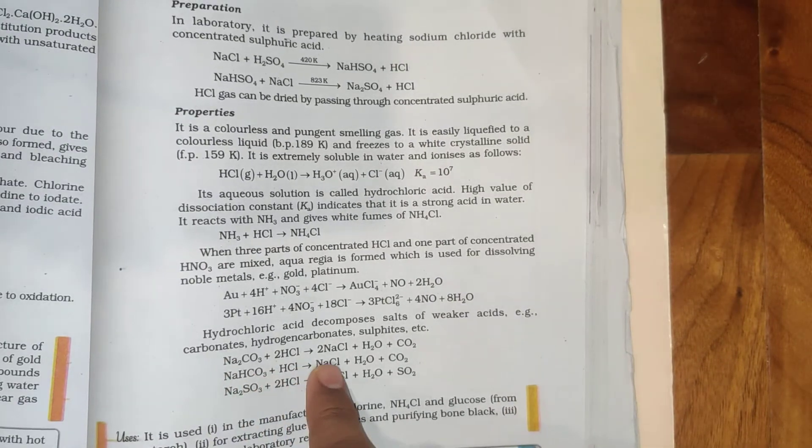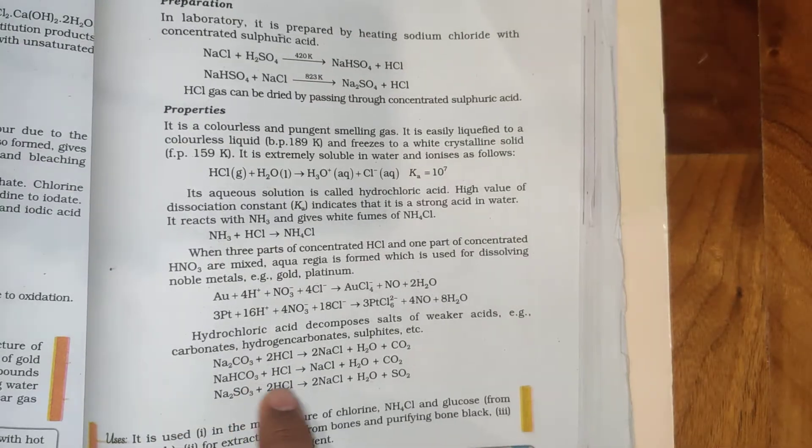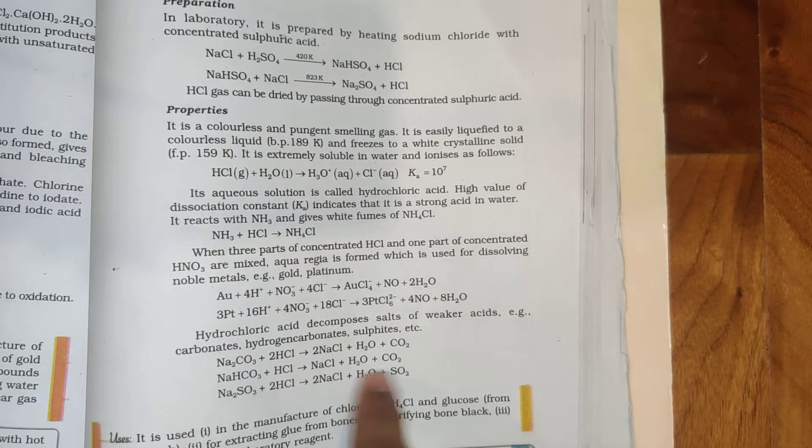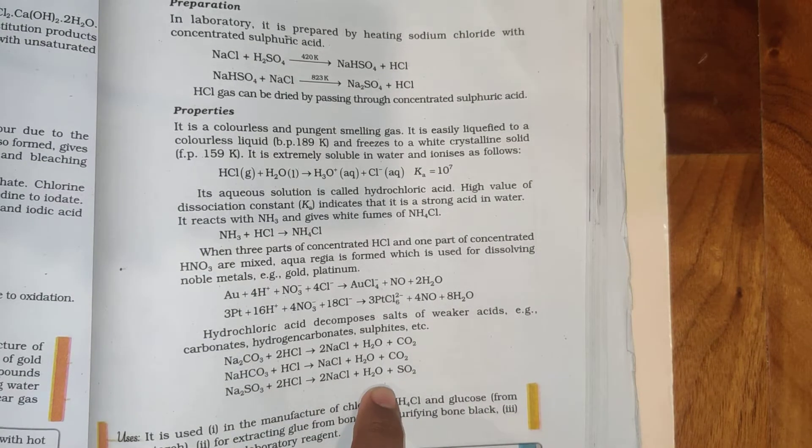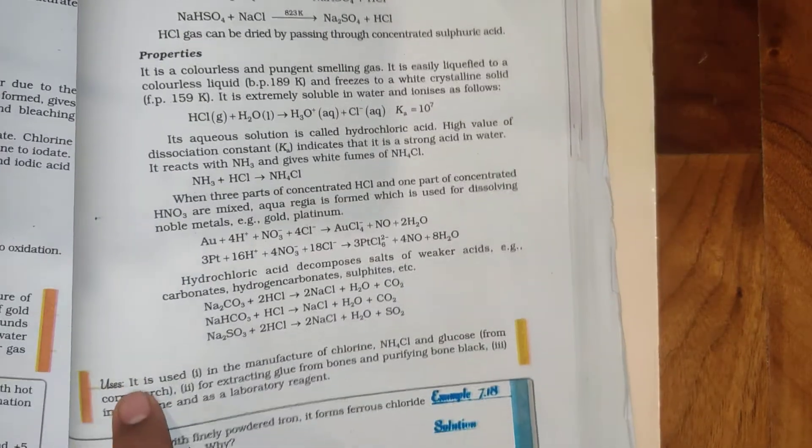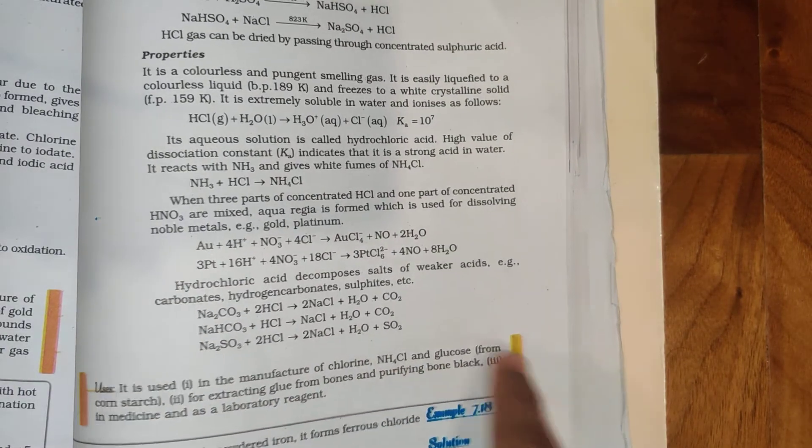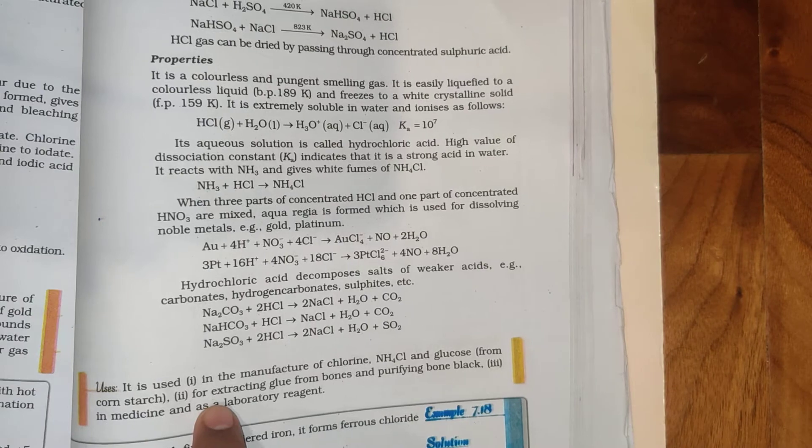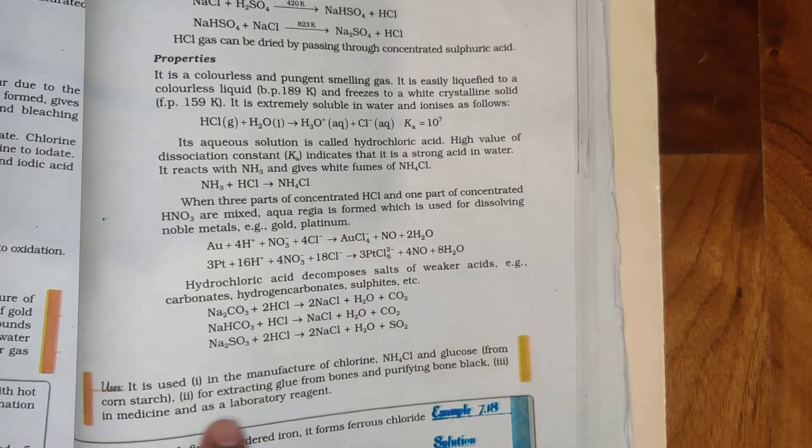Na2CO3 plus 2HCl gives 2NaCl plus H2O plus CO2. NaHCO3 plus HCl gives NaCl plus H2O plus CO2. Na2SO3 plus 2HCl gives 2NaCl plus H2O plus SO2. It is used in the manufacture of chlorine, NH4Cl, and glucose from corn starch, for extracting glue from bones and purifying bone black, in medicine, and as a laboratory agent.